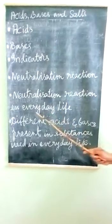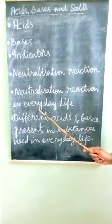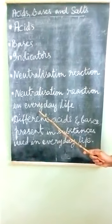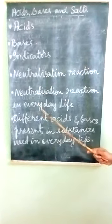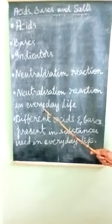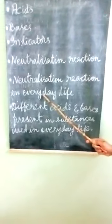In everyday life, if we have more acidity in the stomach, it is neutralized by adding a basic solution — milk of magnesia — to form salt and water, reducing the effect of acid in the stomach.